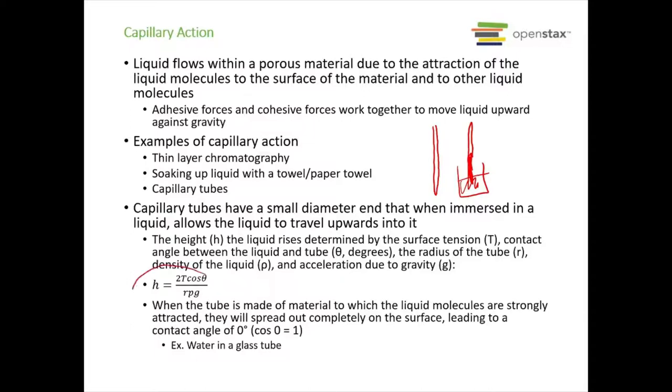So there's the equation here. H equals 2T cosine theta divided by rho g r. When the tube is made of a material to which the liquid molecules are very strongly attracted, they're going to spread out completely on the surface, leading to a contact angle of zero degrees. Cosine of zero is one. An example of this is water in a glass tube.